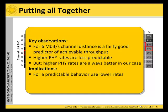For higher physical layer rates the result is much less predictable. However, one thing needs to be noted: if we look at the absolute throughput, the higher physical layer rates are always better in our case. The implication is that for predictable behavior you should use lower physical layer rates.